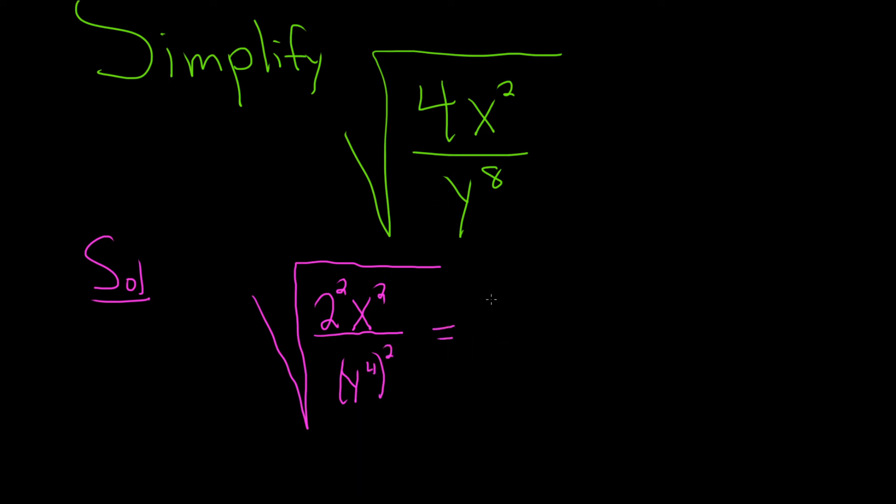So now what you can do is you just take the square root of each piece. So it's the square root of 2 squared, the square root of x squared, and then it's the square root of y to the 4th squared. And the square root will get rid of the 2. That's what it does. And here everything is positive, by the way. So this will be 2x over, and then just y to the 4th. It's almost like it just cancels it. It gets rid of it. So boom. And that would be your final answer.